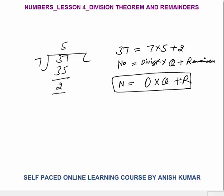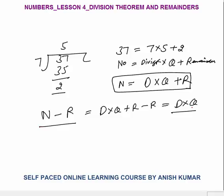Another very important concept is: number minus remainder. That is D into Q plus R minus R, which equals D into Q. So number minus remainder is always a multiple of divisor — or you can say that number minus remainder will always be divisible by divisor.